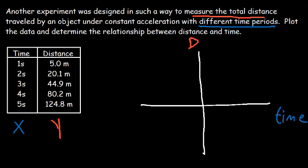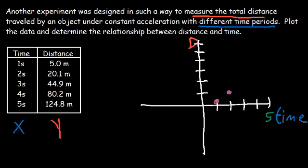Typically, time is usually the independent variable — I don't think I've ever seen time on the y-axis. Time is usually on the x-axis. On the x-axis, we're going to go by 1 until we reach 5. On the y-axis, let's go by 20: 20, 40, 60, 80, 100, and 120. The first point is (1, 5), close to the x-axis. Then (2, 20), approximately. Then (3, 45). Then at (4, 80). And then at (5, 125).